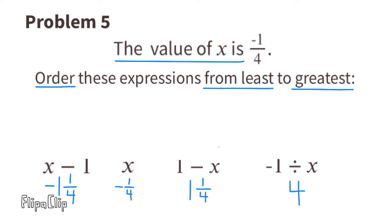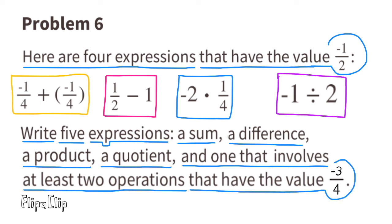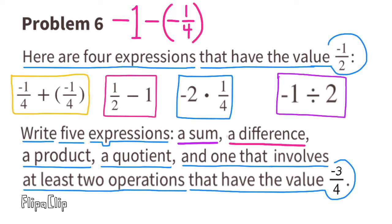Problem number six: here are four expressions that have the same value, negative one-half. Write five expressions — a sum, a difference, a product, a quotient, and one involving at least two operations — that have the value negative three-fourths. For the sum: negative one plus one-fourth equals negative three-fourths. For the difference: negative one minus negative one-fourth is the same as negative one plus one-fourth, also equal to negative three-fourths.